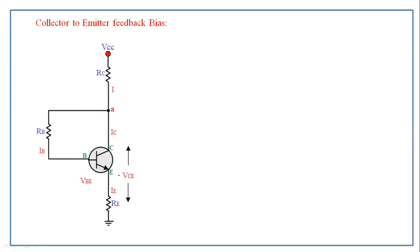This is the circuit diagram of the collector to emitter feedback bias. It has a transistor and three resistors: the collector resistance, the base resistance, and the emitter resistance. Here we are using an NPN transistor, so the emitter current direction is outward, the base current direction is towards the transistor, and the collector current direction is also towards the transistor.